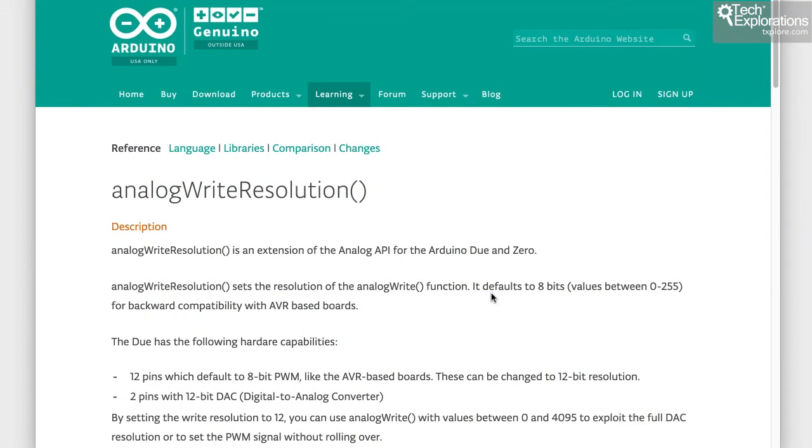In the Arduino Uno with the ATmega328P microcontroller, you can simulate analog signals using pulse-width modulation and the resolution is fixed to 8 bits or 256 different duty cycles.